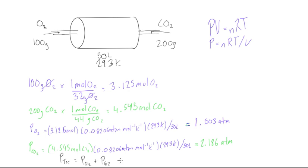Well that seems simple enough so if we just fill these in we'll have the total pressure in our system is 1.503 atmospheres plus 2.186 atmospheres. And this gives us a total of 3.689 atmospheres. And this is our total pressure.